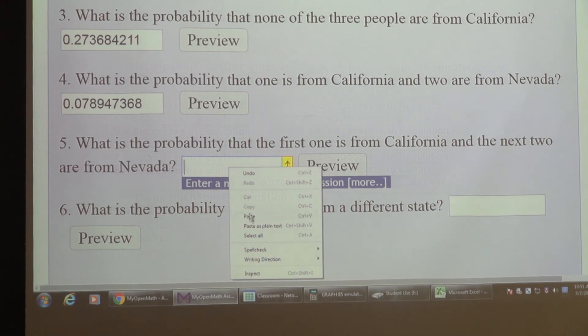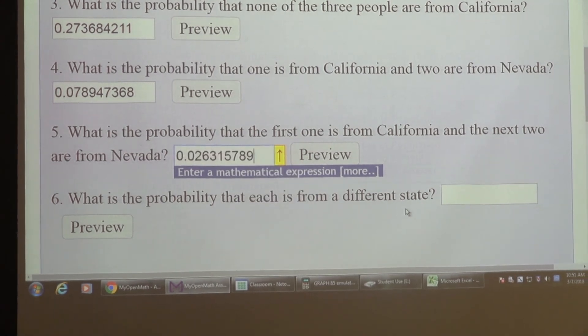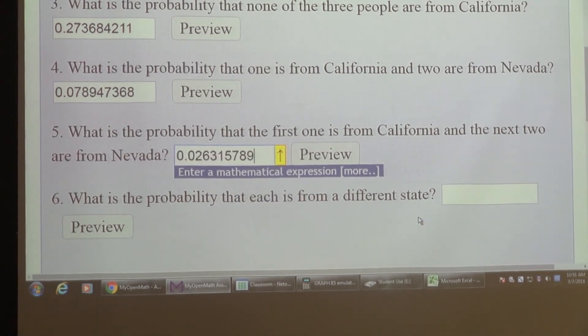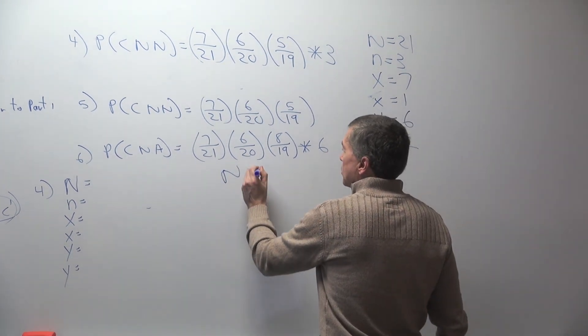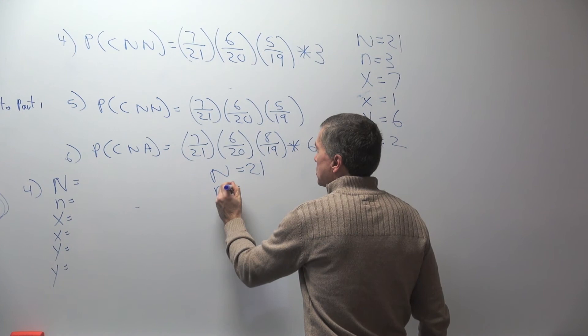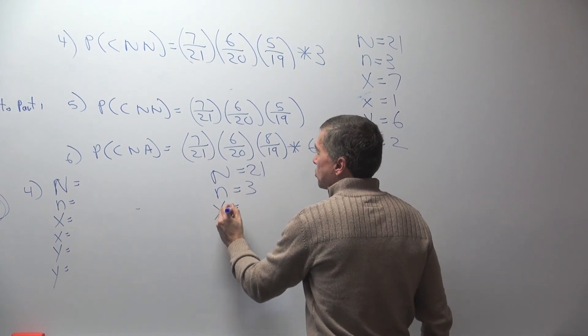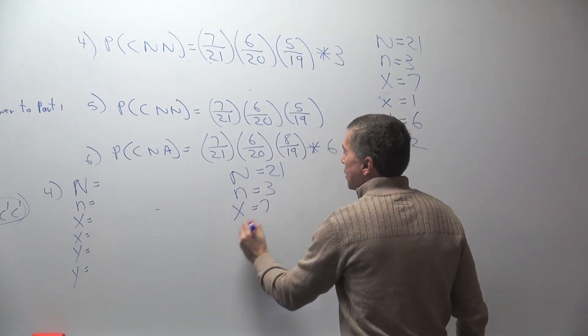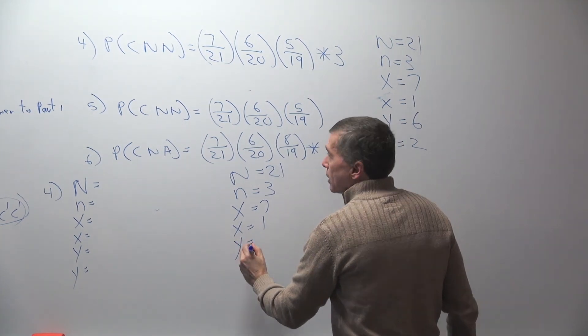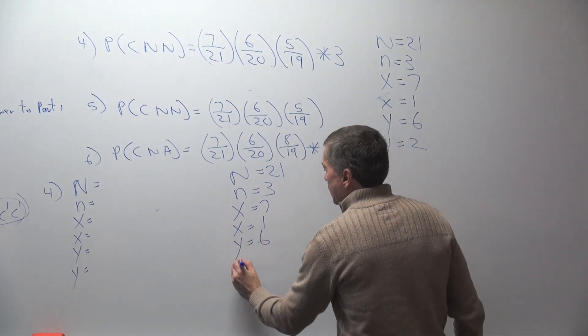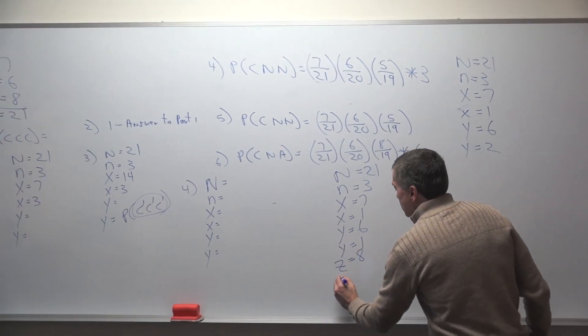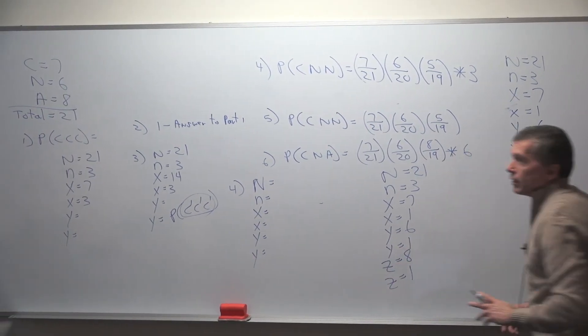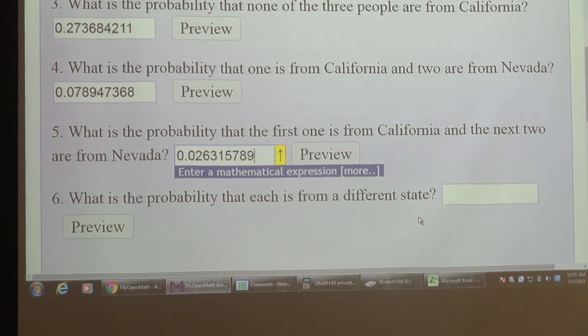And then for the last problem, it says, what is the probability that each is from a different state? So for problem six here, we have 21 people total. We're going to select three people out. Let's start with California. There's seven from California, and I need one. There's six from Nevada, and I need one. And there's eight from Arizona, and I need one. And so that would be the way to do that problem.